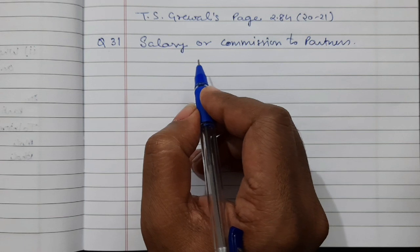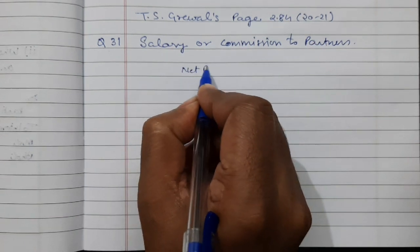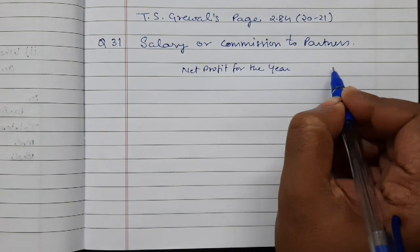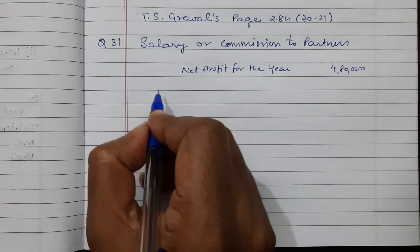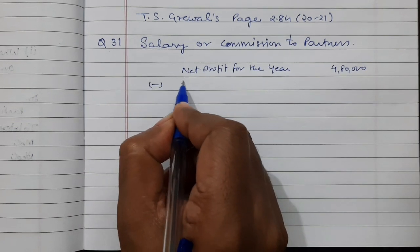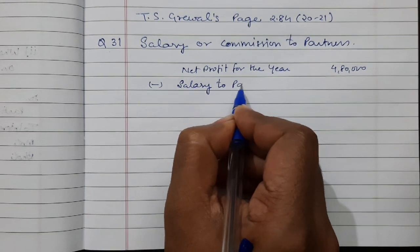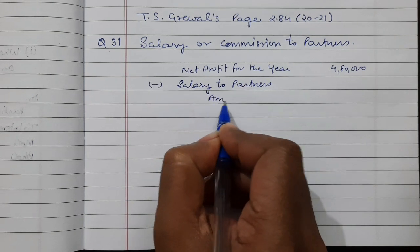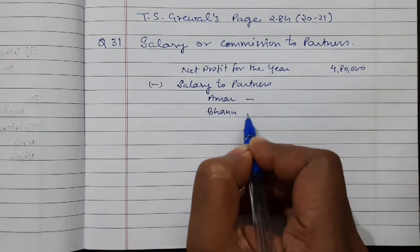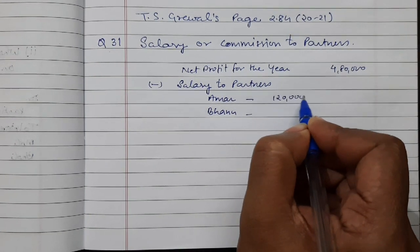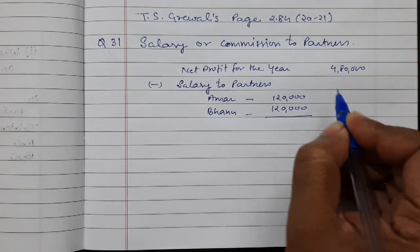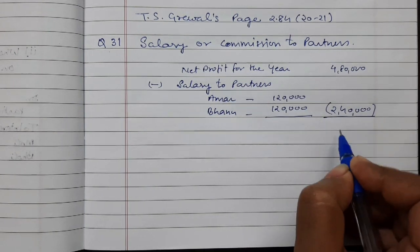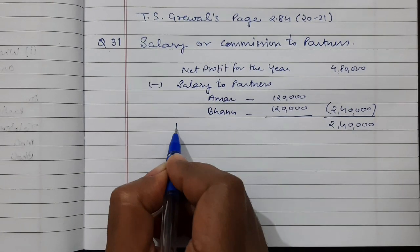To solve this, our net profit for the year is Rs 4,80,000. From this we will subtract salary to partners Amar and Bhanu. Both are getting an annual salary of Rs 1,20,000, so together Rs 2,40,000. Now the remaining is Rs 2,40,000. This is the divisible profit.